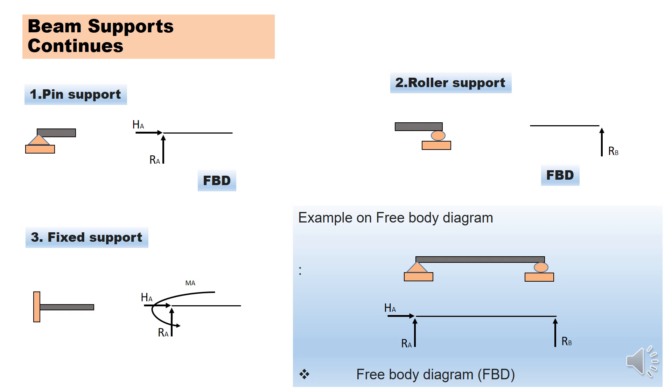And when we have roller support, as this case is shown here, we are going to have only vertical restraint. From the free body diagram we are having something like this.